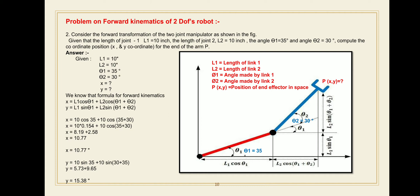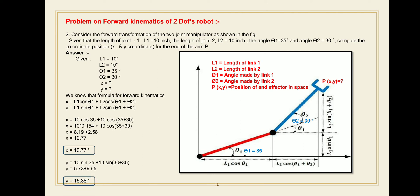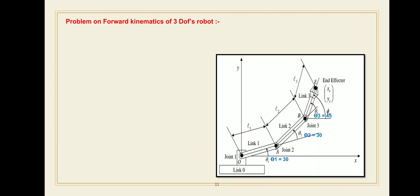Then put all the given values into the Y equation and find the Y component of the 2 degrees of freedom robot using the four joint angle parameters. The value of Y is 15.38 and the value of X is 10.77. So the unknown position of end effector P is X = 10.77 and Y = 15.38. Next, we move to the problem on forward kinematics of a 3 degrees of freedom robot.